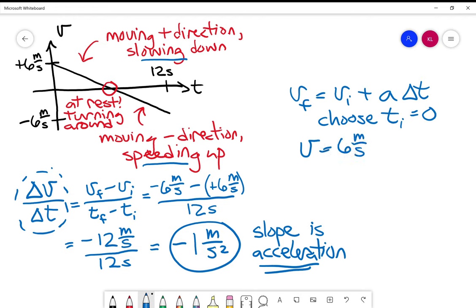meters per second plus negative one meters per second squared times time. And that's the equation of that line. When you have constant acceleration, velocity is a straight line.